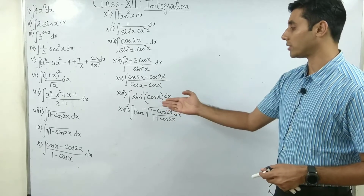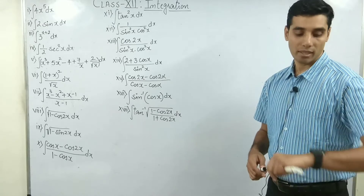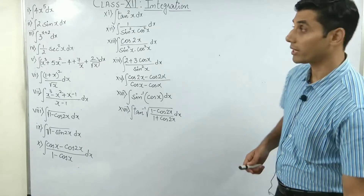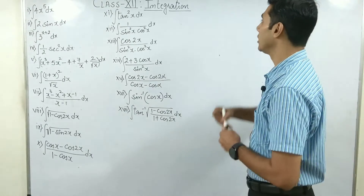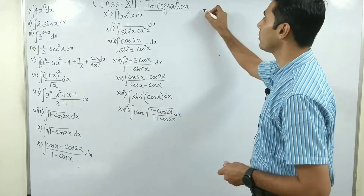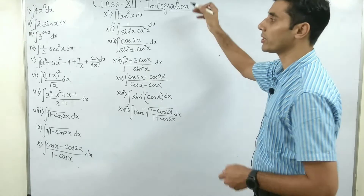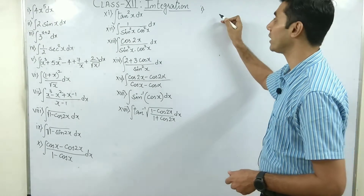We have to do around 17 questions and that will take around 30 to 40 minutes. So without wasting time, let us jump. Question number 1 — it is a very very simple question: integrate 4x to the power 5 dx.